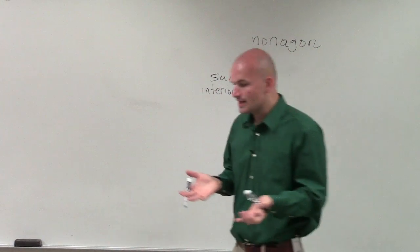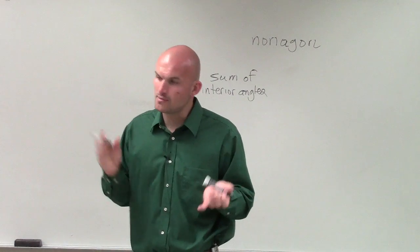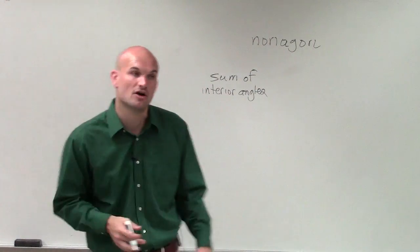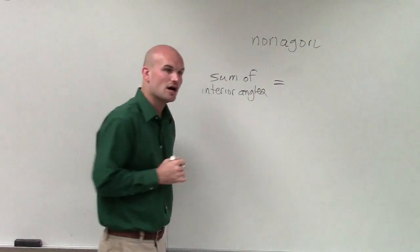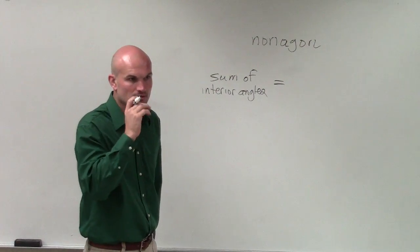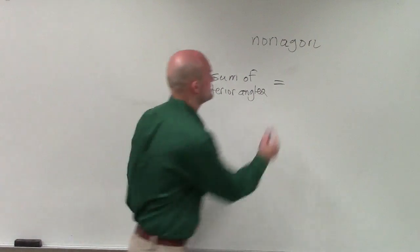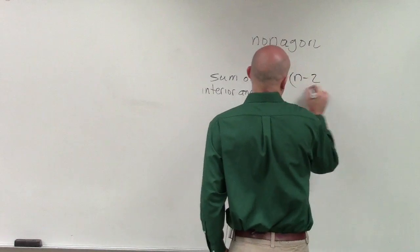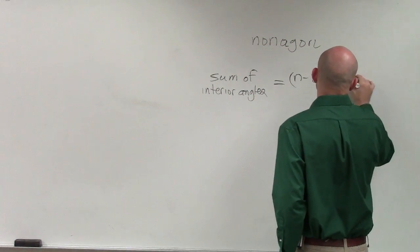So what we did, Kaylee, was we took our figures and we cut them up into different triangles to find the sum of all the interior angles. And what we found out was the sum of our interior angles is equal to n minus 2 times 180 degrees.